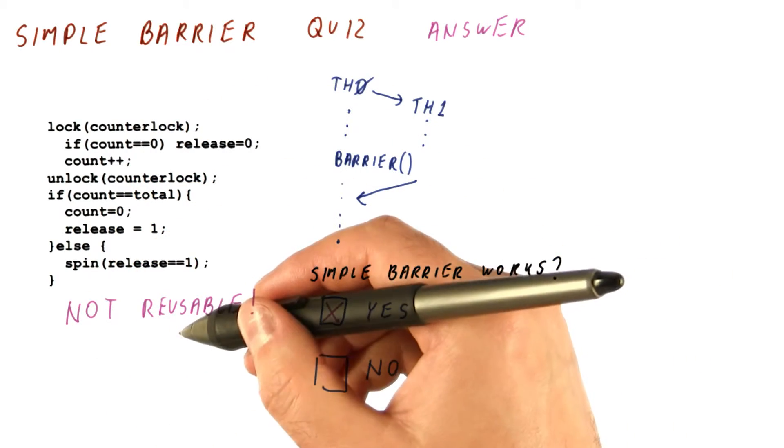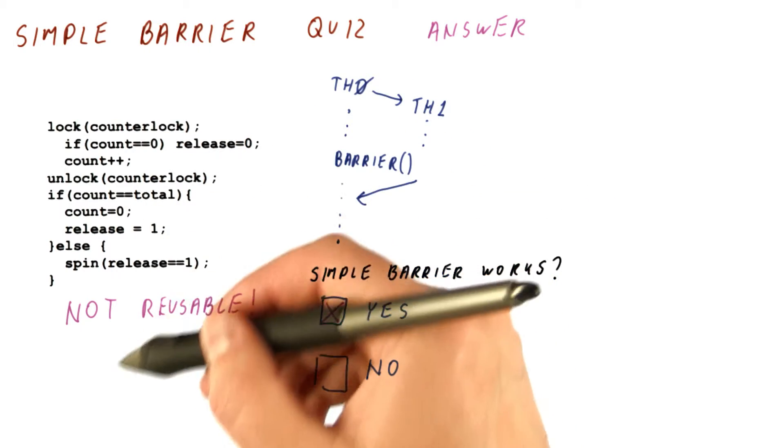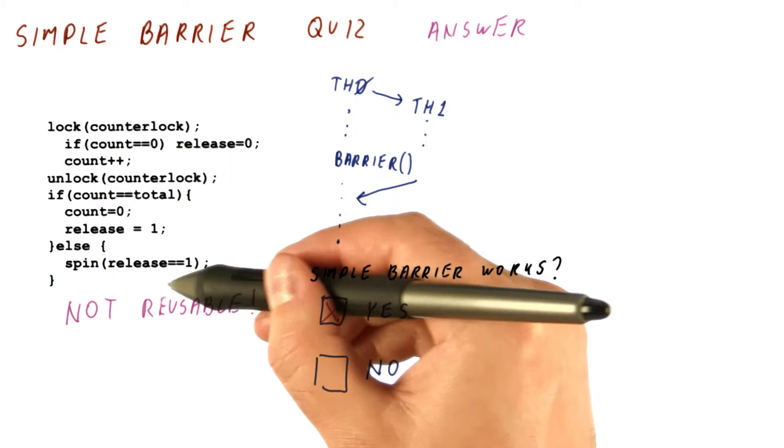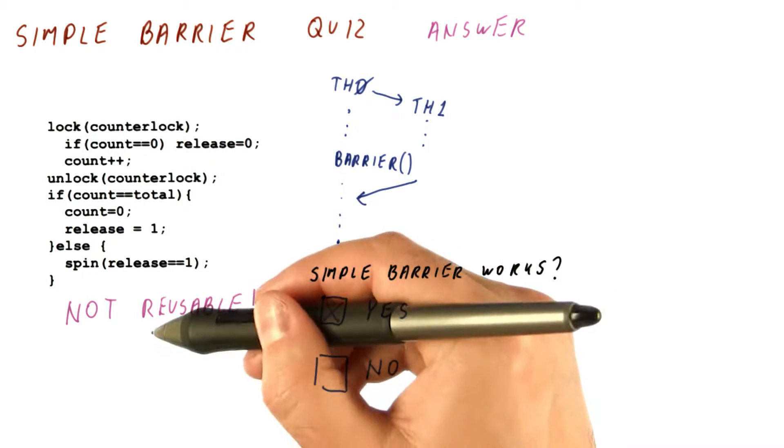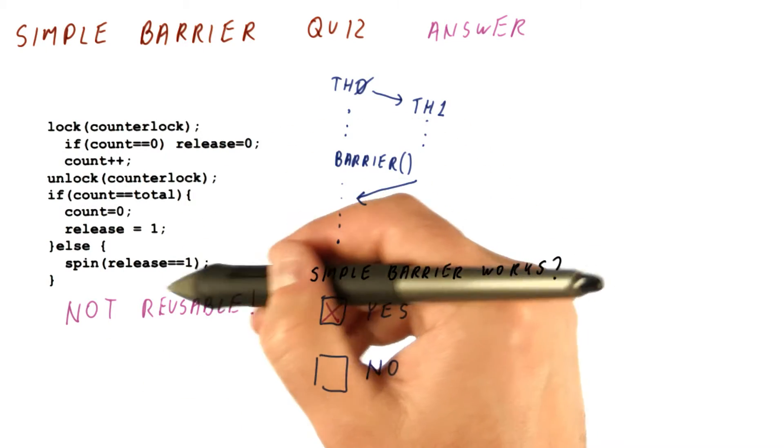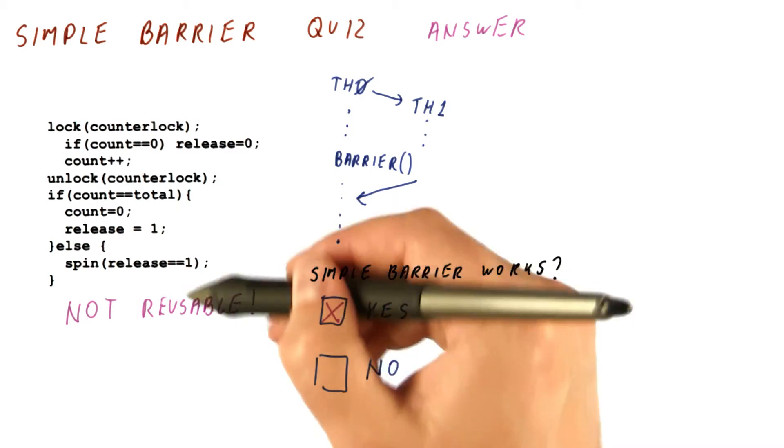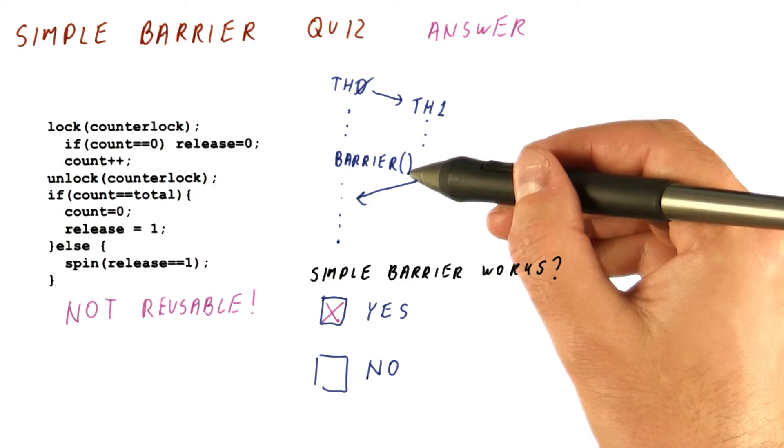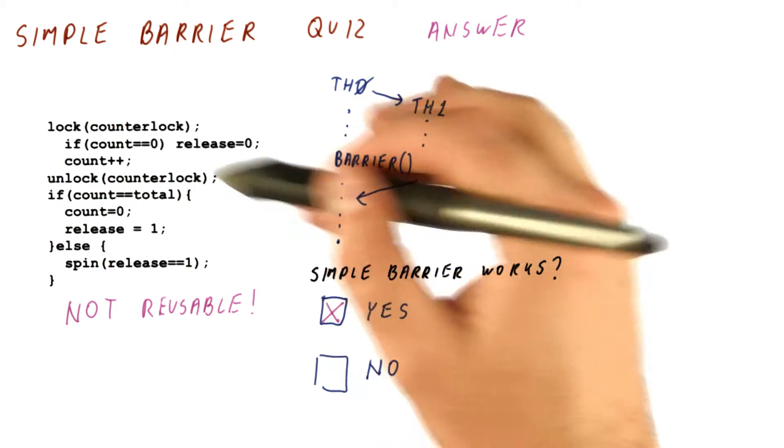So the problem occurs if we try to use this barrier again after the first time you use it, in which case somebody might be stuck still here. And we reset this so that they never leave the first instance, while everybody else is in the second instance. But unless we have that second instance of the barrier, this barrier works.